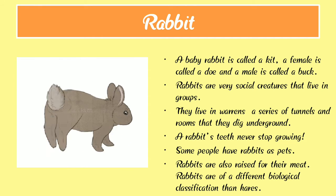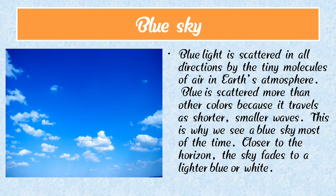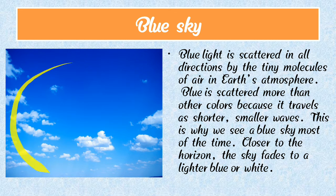Now we are going to learn our next slide, and it's the blue sky. B-L-U-E-S-K-Y. Blue sky. Here we can see a photograph of the sky, and it is blue in color. Our sky seems to be blue because blue light is scattered in all directions by the tiny molecules of air in Earth's atmosphere. Blue travels as shorter, smaller waves, and this is why we see a blue sky.